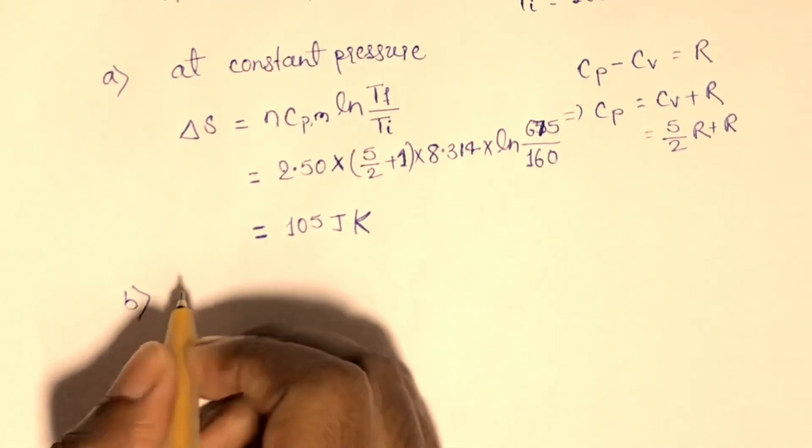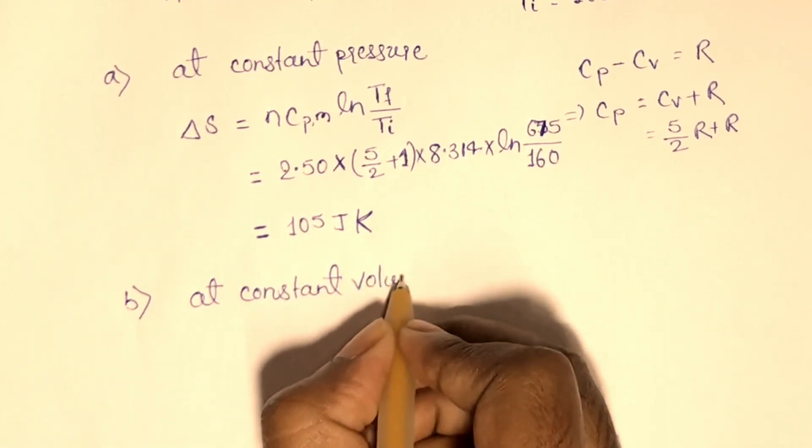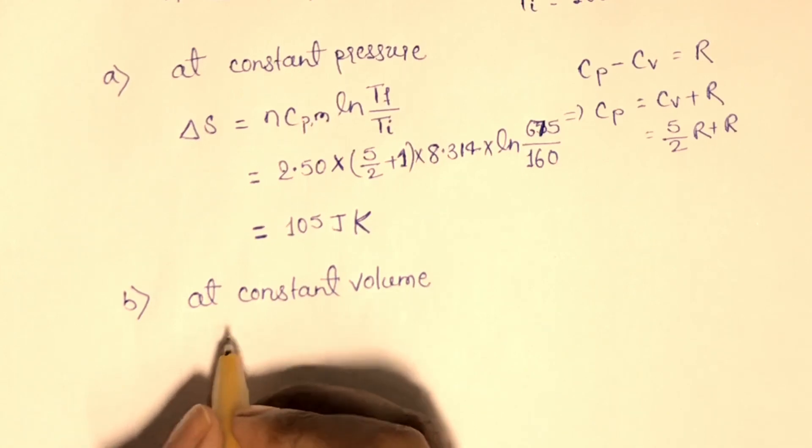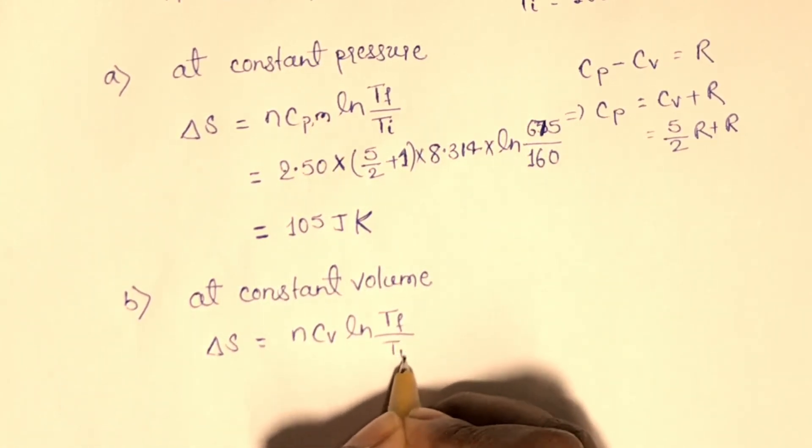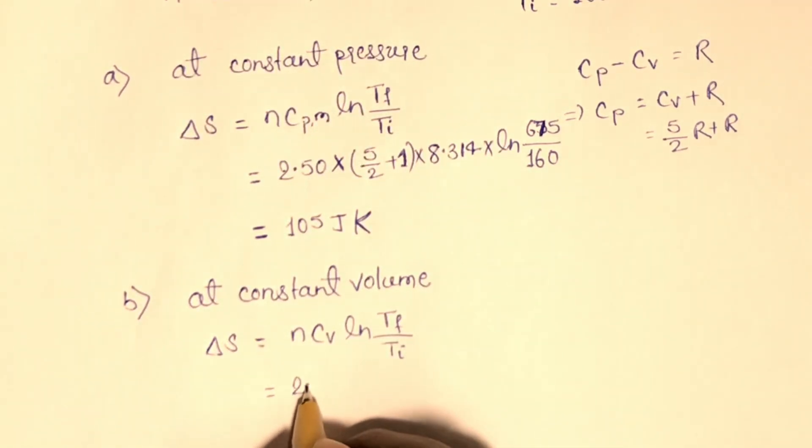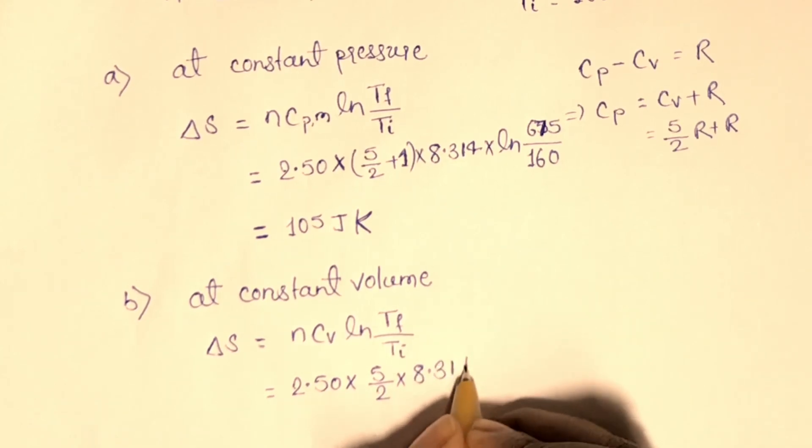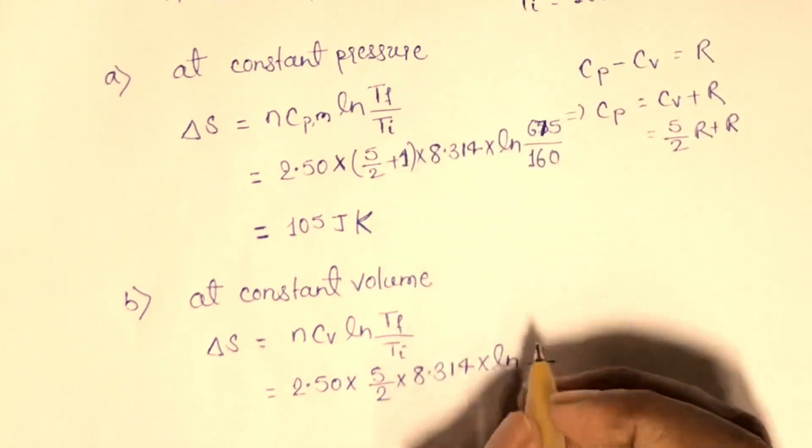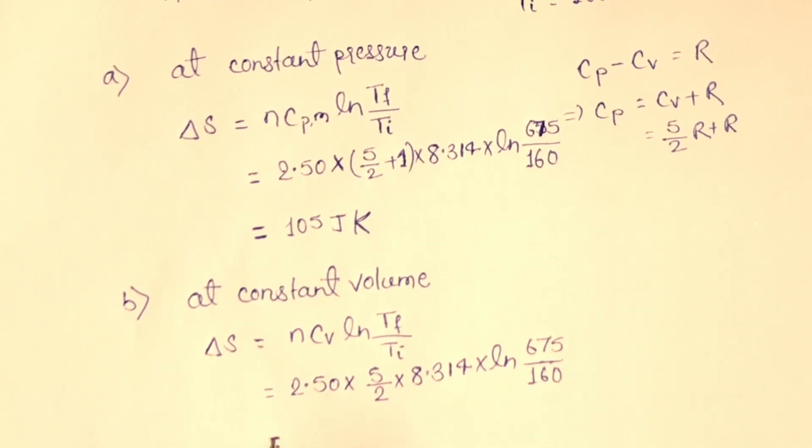Now we will calculate entropy change at constant volume. At constant volume, entropy change is Ncv ln T final upon T initial. Here N is 2.50, Cv is given 5 by 2 R. We will put the value of R which is 8.314 into ln T final, T final is 675 Kelvin upon 160 Kelvin. When we calculate the values of these, we will get 74.8 Joule per Kelvin. This is the value of entropy change at constant volume.